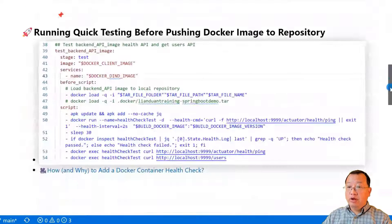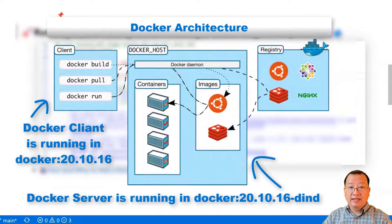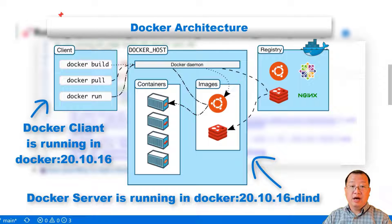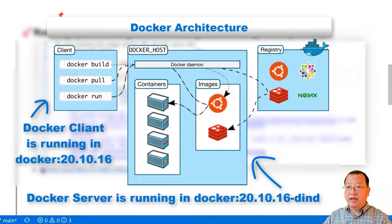Next topic is running quick testing before pushing a Docker image to a repository. Before we dive into the test job, let's cover some background knowledge. Docker is a client and server architecture. The Docker image is a client in the GitLab CI/CD. Docker in Docker is the server. When we run Docker commands, the Docker client will run a RESTful API call to the Docker server. If we use the curl command to call the running Docker instance in Docker in Docker, we will get a connection refusal. When we learn how to run curl commands inside Docker in Docker, the detail is in the test backend API image job.